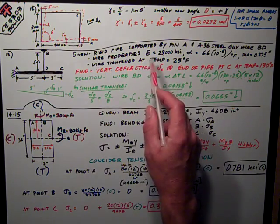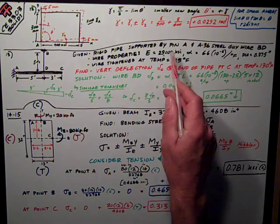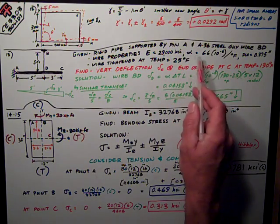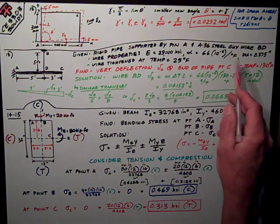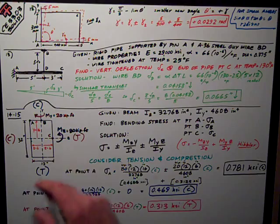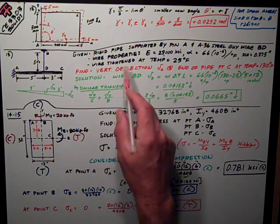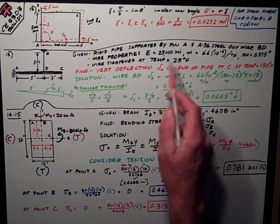The properties of the wire that we gave to you, not all of which you need, are E = 29,000 ksi, α = 6.6×10⁻⁶ strain per degree Fahrenheit. The diameter of the wire was given as 0.375 inches, and you were told that the wire was tightened into this initial position at 25 degrees temperature.